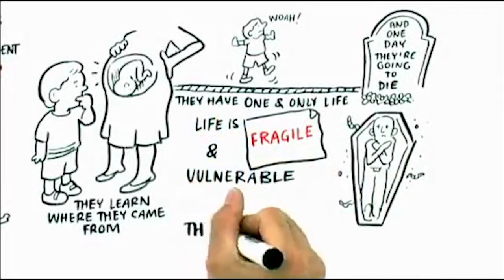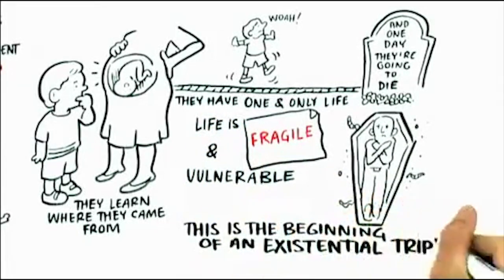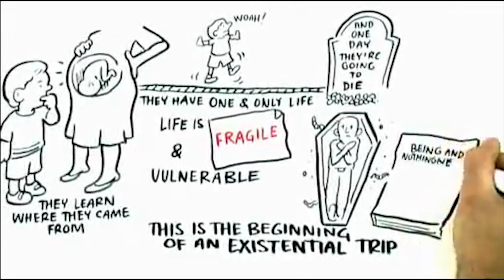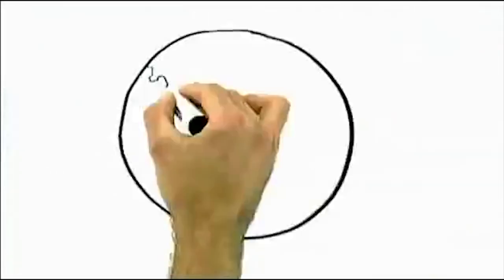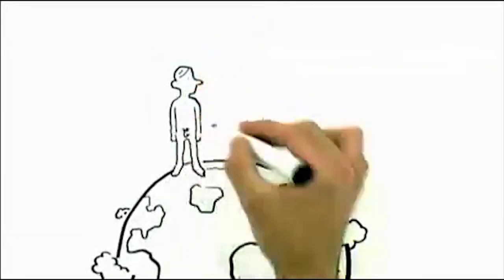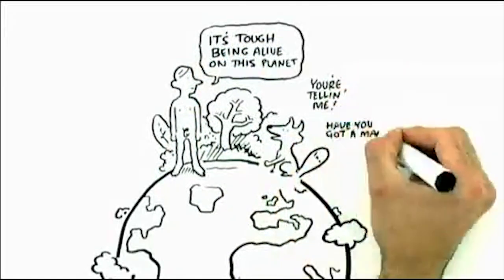That's the beginning of an existential trip. Because when a child learns about birth and death and they have a one and only life, they realize how fragile and vulnerable life is. It's very tough being alive on this planet, whether you're a human being or a fox navigating the forest.